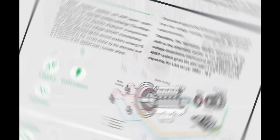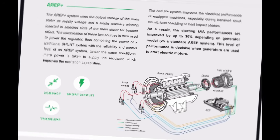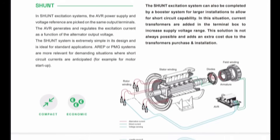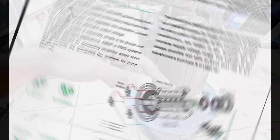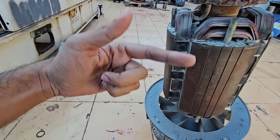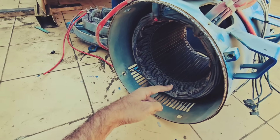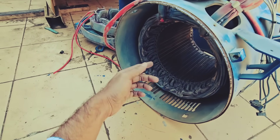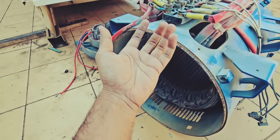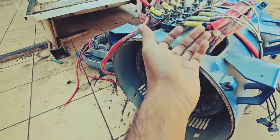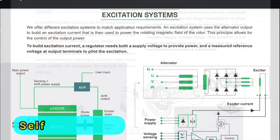Let's start from the basics. The excitation system is the most important part of any alternator because without excitation, no alternator can generate electricity. Its main job is to provide current to the rotor winding or field winding to create a magnetic field inside the alternator. This magnetic field is what generates electricity in the stator winding through electromagnetic induction. The current flowing inside the rotor winding is always DC current, never AC.